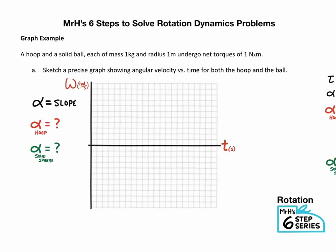Of course we can't end there. We got to do a graph problem. A hoop and a solid ball, each of mass 1 kilogram and radius 1 meter, undergo net torque of 1 Newton meter each. Sketch a graph showing the angular velocity versus time for both the hoop and the ball. Okay, with graphs, one of the first things you always have to do is to ask yourself, does it mean something if I divide these axes? Omega divided by T, what is that?